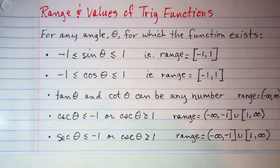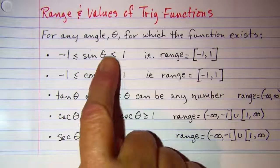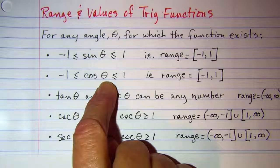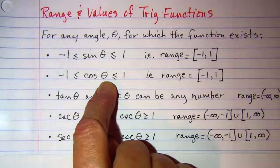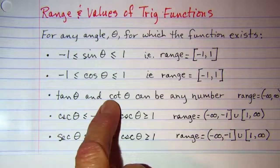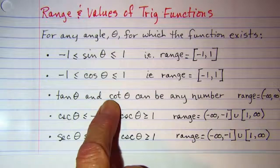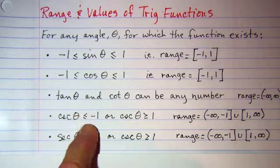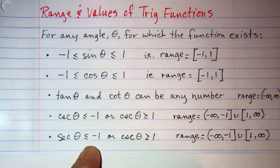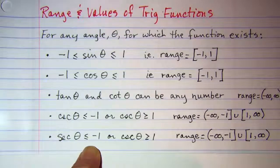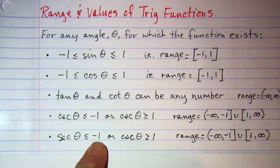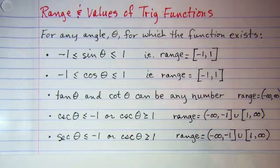The thing you should notice is that sine and cosine have values between negative one and one. Tangent and cotangent have values that can be any number at all. And cosecant and secant have values that are less than negative one or greater than positive one, so they can never be in the span between negative one and one.